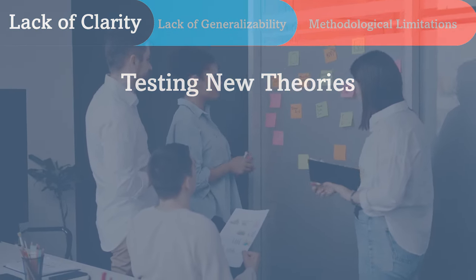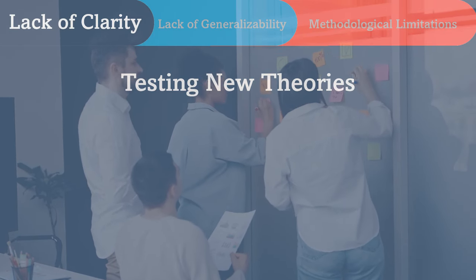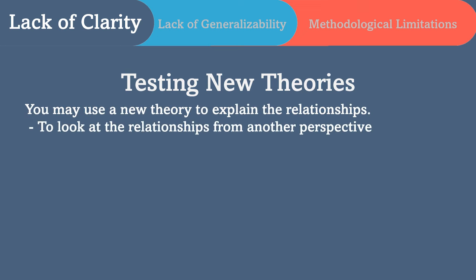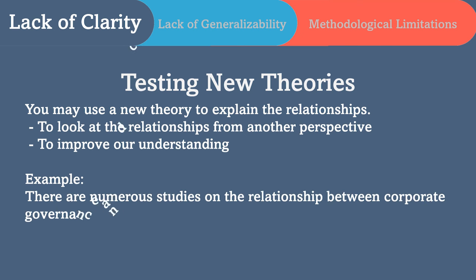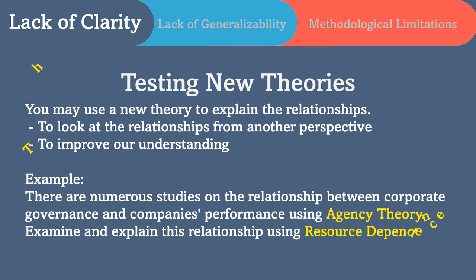There might be a large body of research to explain a concept or relationships between some variables using some specific theories, and you may use a new theory to explain those relationships. This would help us look at the relationships from another perspective and improve our understanding. For example, there are numerous studies on the relationship between corporate governance and companies' performance using agency theory. You could examine and explain this relationship using another theory, like the resource dependence theory, which has not been extensively used in the past.